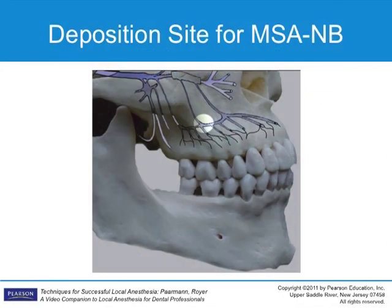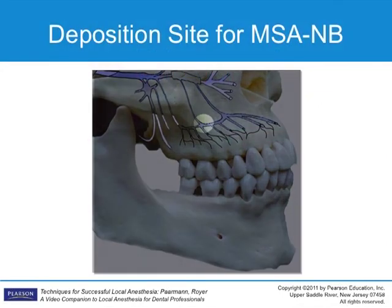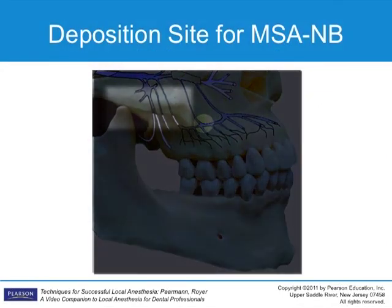When administering the MSA injection, the zygomatic bone is frequently located in that area and obviously cannot be moved. Advancing the needle any deeper is impossible in that case. Because the needle is inserted at the height of the mucobuccal fold, is in close proximity to the root apex, and the maxillary bone is rather porous, anesthesia will be possible to achieve in that area. Therefore, continue with the injection.